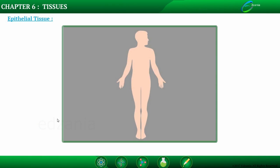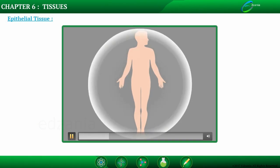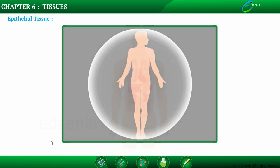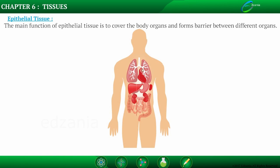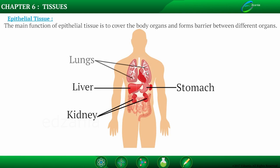Epithelial tissue is the covering or protective tissue in the animal body. Its main role is to cover most organs present within the body — such as the stomach, kidney, liver, and lungs — and to form a barrier to keep different body systems separated.